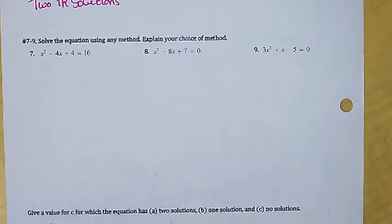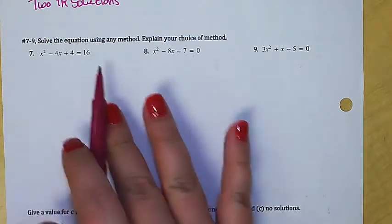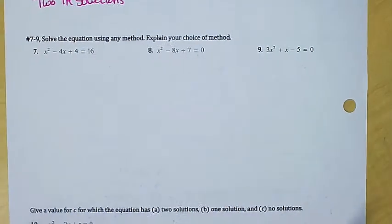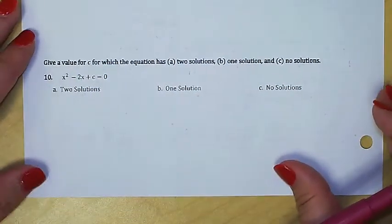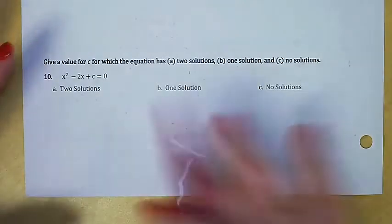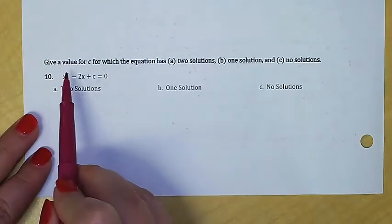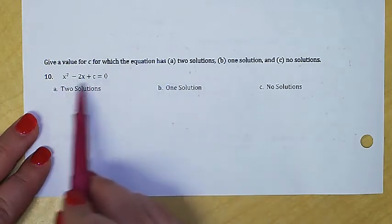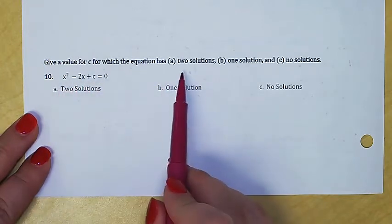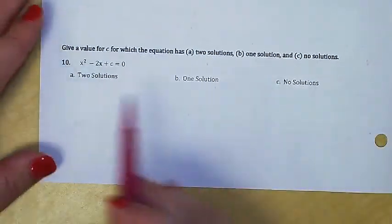The next section is just reviewing how to solve quadratic equations by any method, getting more practice with choosing which method to use. We'll skip that on the lesson video and work a few in class. Let's look at problem ten, which revisits the concept of two solutions, one solution, or no solutions. It says: give a value of c that makes the given equation have two solutions, one solution, or no solution.